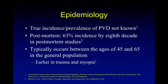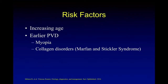We do not know the true incidence and prevalence of PVD because it's difficult to study. There is no single reliable test to confirm whether a person definitely has PVD, does not have PVD, or has a partial PVD. In post-mortem studies, about two-thirds of people have PVD in the eighth decade of life, and PVD typically appears between the ages of 45 and 65. Risk factors include increasing age — as we get older, we get more PVD and floaters. Earlier PVD can happen in myopic people and with some disorders, for example Marfan's and Stickler syndrome.